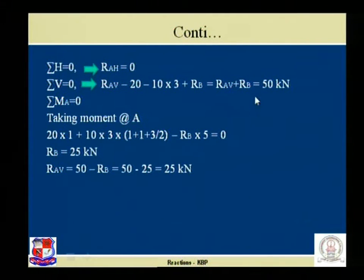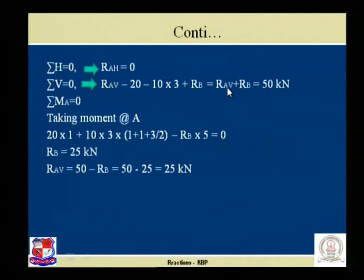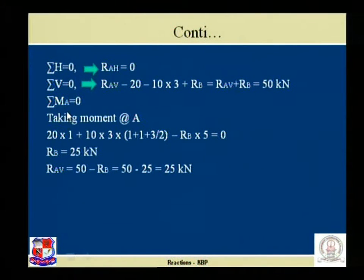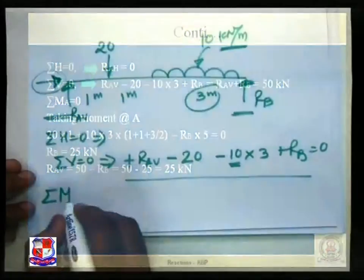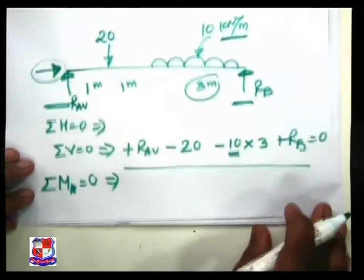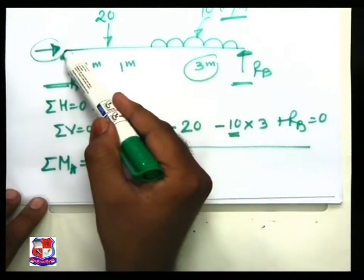Using sigma V equals zero, we establish a relationship between the two vertical reactions, but we cannot find a single reaction value for a simply supported beam. So we must use the third equilibrium condition: sigma M at A equals zero, or sigma M at any chosen point equals zero. Let us take sigma M_A equals zero and take the moment of all forces.